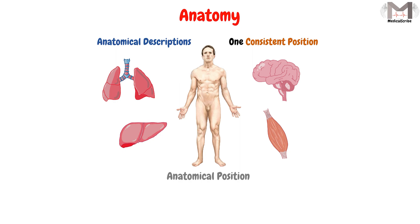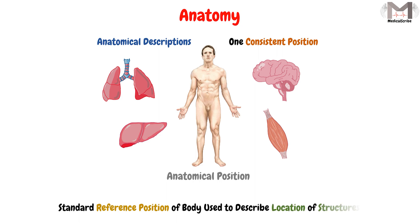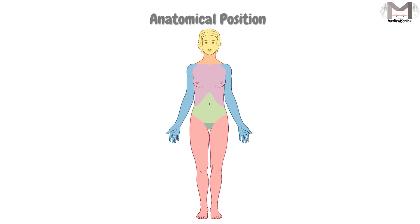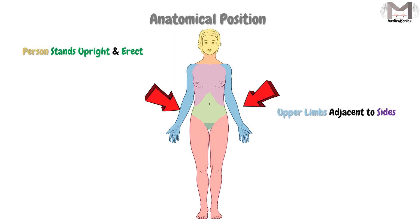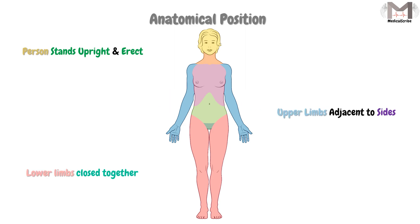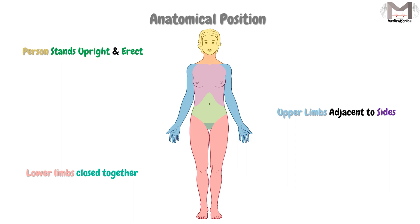The anatomical position is the standard reference position of the body that is used to describe the location of structures. The body in anatomical position must be like this: first of all, the person stands upright and erect, with the upper limbs adjacent to the sides, while the lower limbs are close together. This is the general appearance of a person in anatomical position.